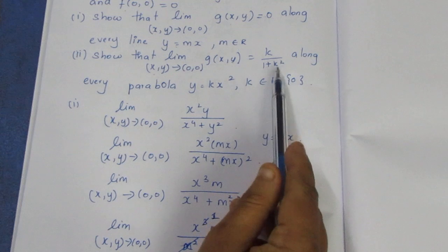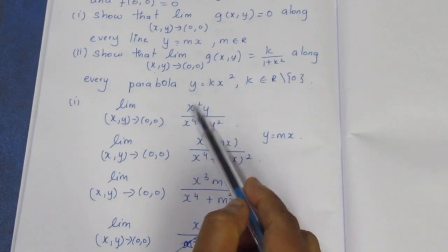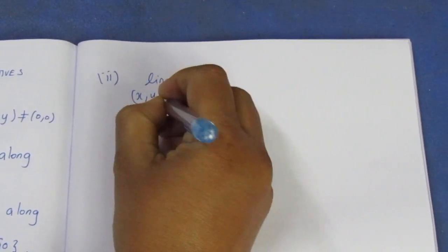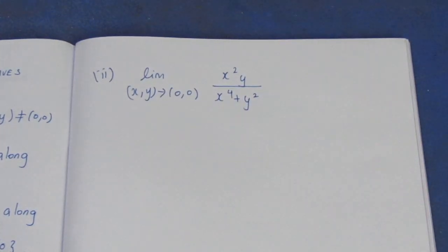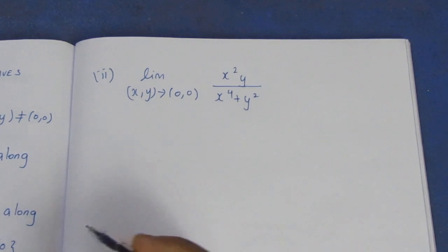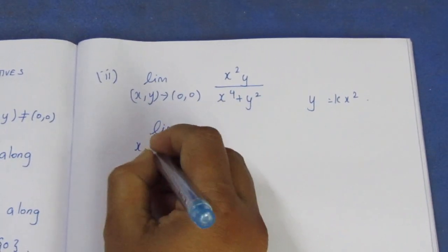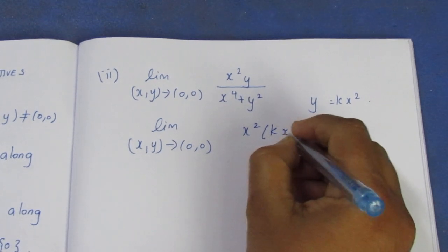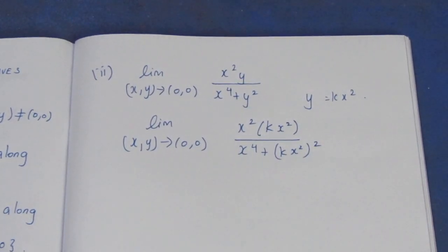So this is equal to k divided by 1 plus k squared — proof of that. Substituting y equal to kx squared into g(x,y): the limit as (x,y) tends to (0,0) of x squared times kx squared divided by x to the power 4 plus (kx squared) squared, which equals x to the power 4 times k in the numerator, divided by x to the power 4 plus k squared x to the power 4.